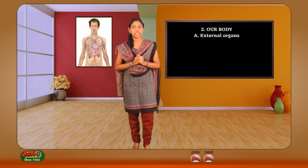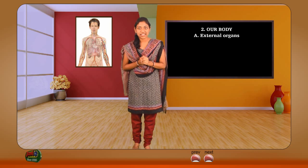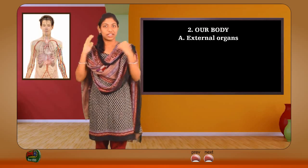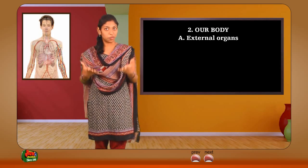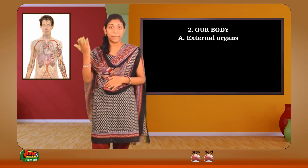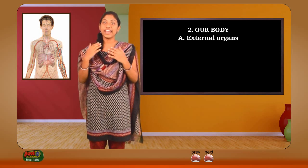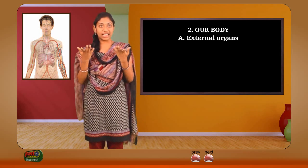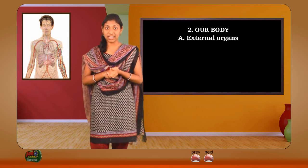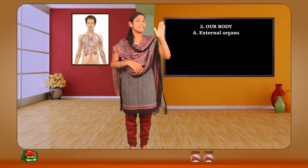Our body: External organs. Hello students, our body is composed of organs that are part of different body systems that allow the human body to work. External organs are the organs which support any purpose and to do any work. They can be seen with the naked eyes externally without using any instrument. External organs like skin cover the entire body and protect from damage, temperatures, infections, etc. In this lesson, you will learn about our external organs.